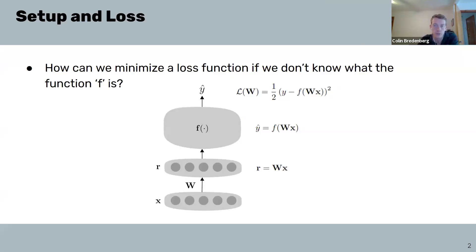Consider the following setup. We have a neural network, or brain, that is receiving inputs X, which are being fed into a neural network layer by synaptic weights W to create a neural network activity denoted by R. This neural network activity is then mapped through some complex function F, which we may not have access to, to produce outputs Y hat.